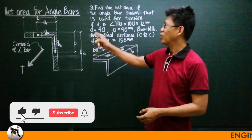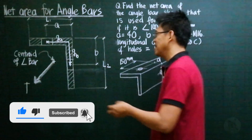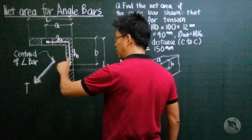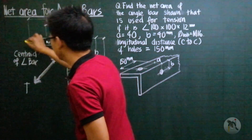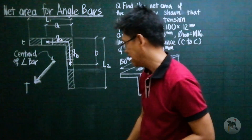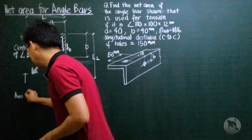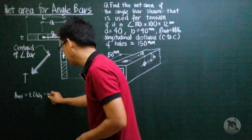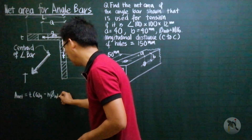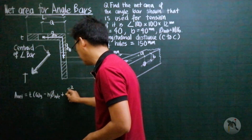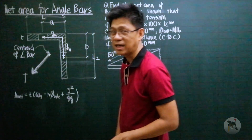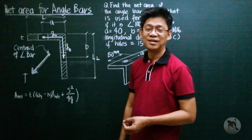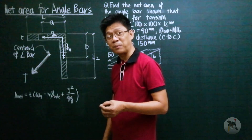So what about the net area of angle bars? This is it. If you have a hole here and a hole here, this is the width of the hole, this is the thickness of the plate. The net area is going to be equal to the thickness times the gross width minus the number of holes multiplied by the diameter of hole, plus s squared over 4g. Remember that s is the distance center to center of holes in the same direction as the load, and g is perpendicular to s.